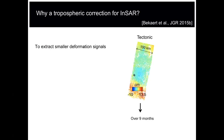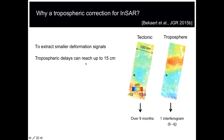Why do we want to do a troposphere correction for InSAR? Generally it is to extract smaller magnitude signals. Here on the right-hand side you can see an example of a long-wavelength tectonic signal — it's accumulated over nine months and you see about 10 centimeters of tectonic signal for a subduction zone. If we compare that to the troposphere, we're looking at easily 15 centimeters in an individual interferogram, so you can see that the tectonic signal is well hidden within the noise floor.